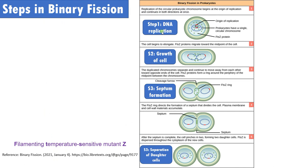To summarize the steps in binary fission: the first step is DNA duplication; the second step is cell growth in size with FtsZ protein aligning at the center; the third step is septum formation where the FtsZ ring forms, followed by deposition of plasma membrane and cell wall material directed by the FtsZ protein. Finally, when septum formation is complete, the cell separates and the FtsZ protein disperses in the cytoplasm of the new cells. Thus, two exactly identical cells are formed as a result of binary fission.